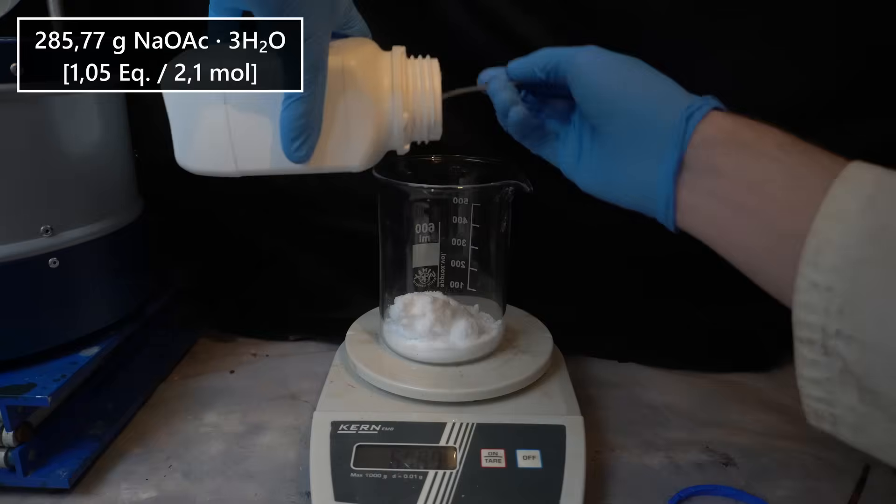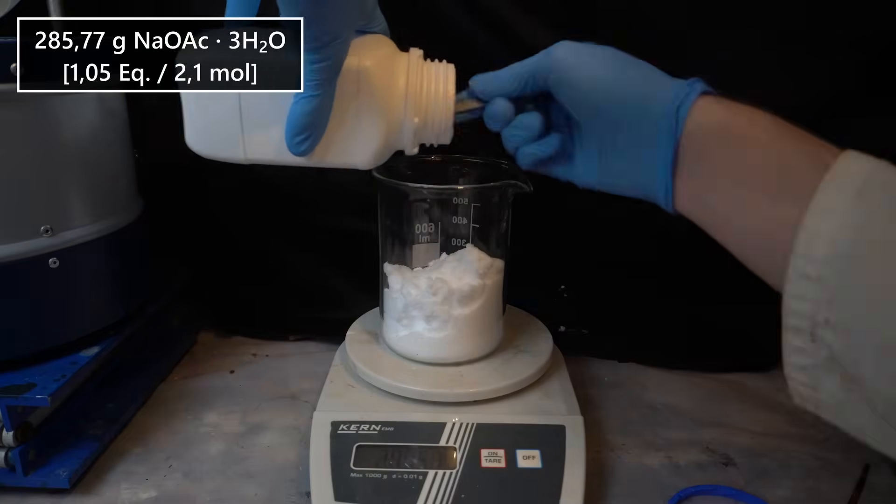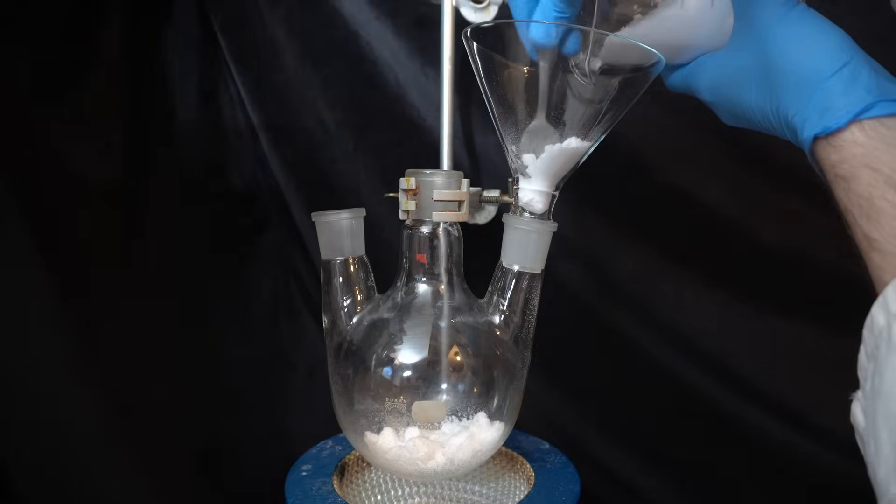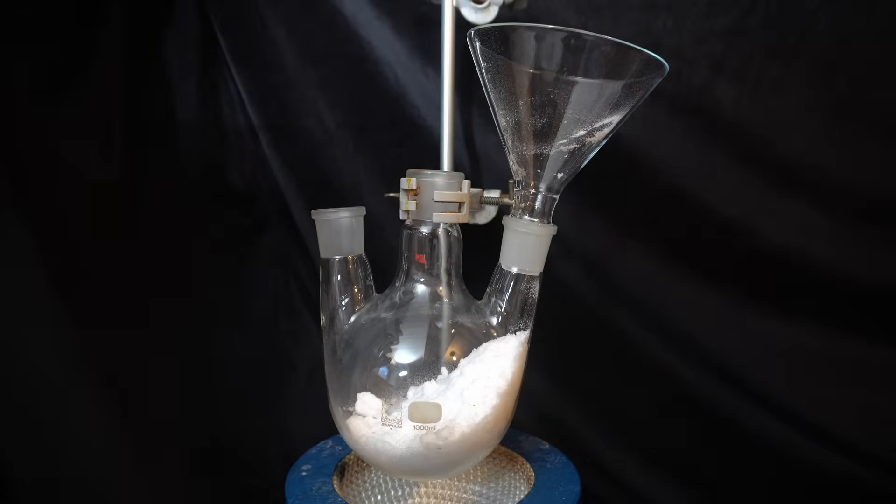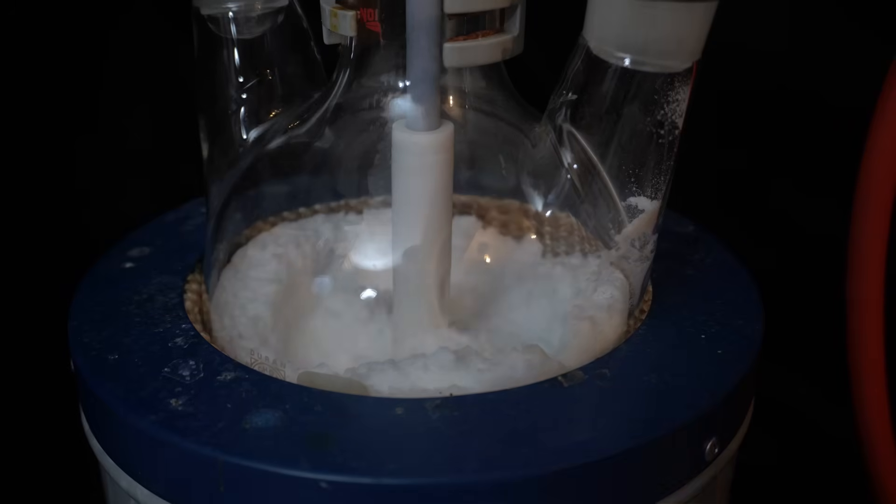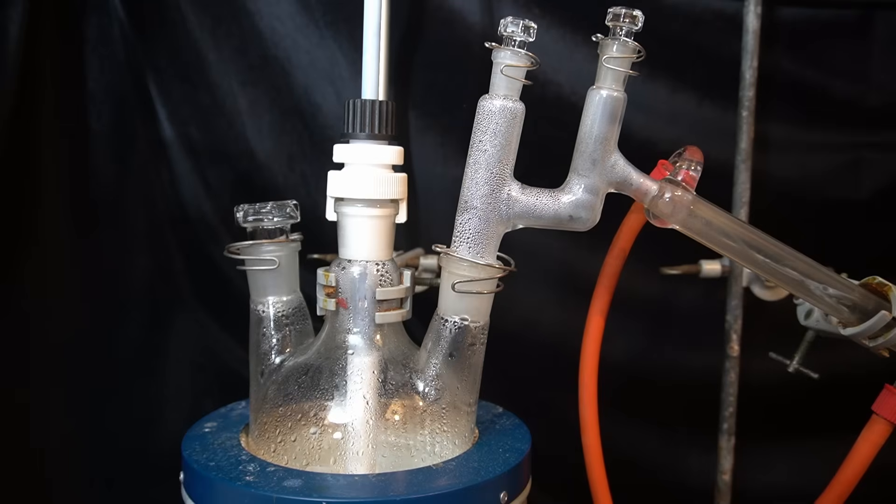I weigh out 286 grams of sodium acetate trihydrate and fill it into a 1 liter round bottom flask. At first, I wanted to try distilling the water out of the reaction flask directly, as this would allow me to keep everything in a single container. And while mechanical stirring works really well at the beginning, where the sodium acetate is a free-flowing powder, it will clump together into an extremely hard mass as the dehydration proceeds.